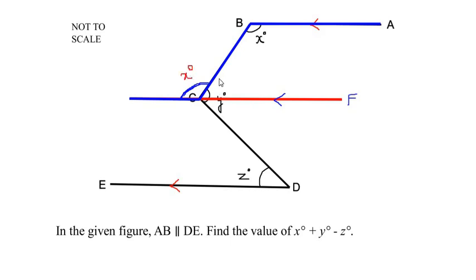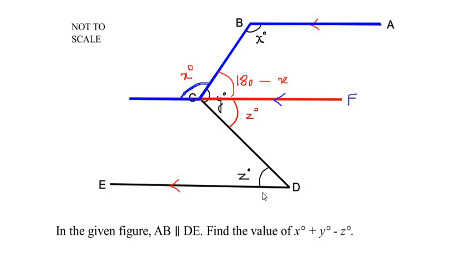From that, we can see that angle C equals x because of the alternate angle property. Therefore, the remaining angle becomes 180° − x. Now let us look at the parallel lines CF and ED. Angle z at point D will be equal to this angle at C, and we write it as z° because of the alternate angles.